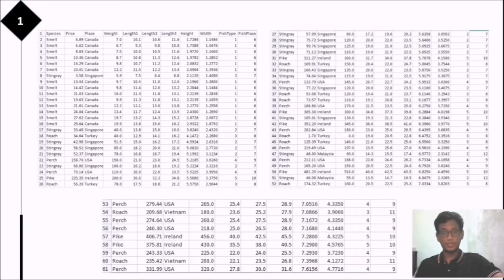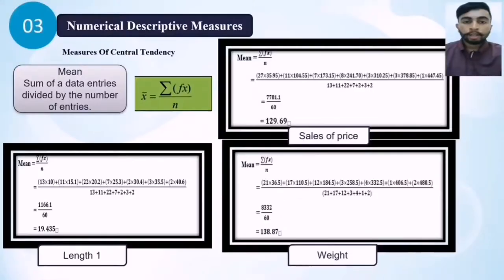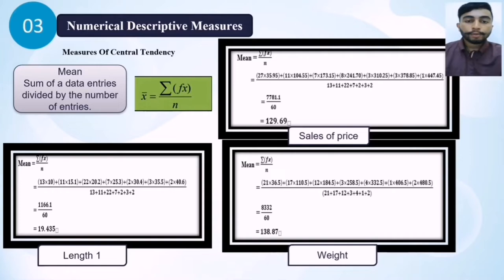These are the data obtained from doing the method. I am going to present Part 3 of the assignment, which is numerical descriptive measurement. In numerical descriptive measurement, there are 3 parts: measure of central tendency, measure of position, and measure of variation. Measure of central tendency has 3 components: mean, mode and median. Mean is the sum of data entries divided by the number of entries. For length 1, the mean is 19.435. For sales price, the mean is 129.69. For weight, the mean is 138.87.